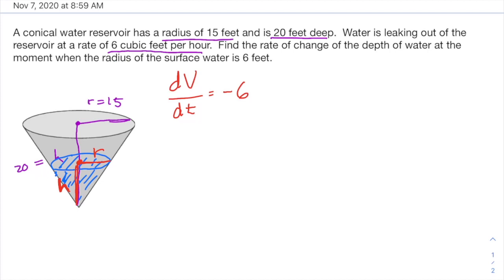So when it refers to the water leaking out at a rate of six cubic feet per hour, the units are a dead giveaway. That's referring to the rate of change of its volume. dV/dt is negative six since it's losing at a rate of six cubic feet per hour. That's a negative rate of change. And we are trying to find the rate of change of the depth of water. So really trying to find the rate of change of this right here, the height of the cone of water. So dh/dt is what? When the radius of the surface water. So that's referring to this radius at the moment when that r is six.